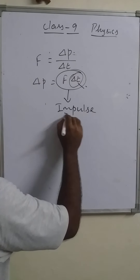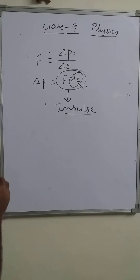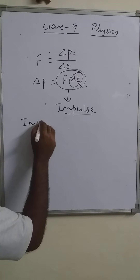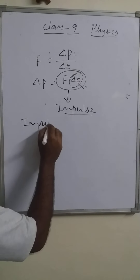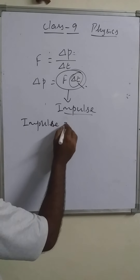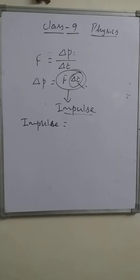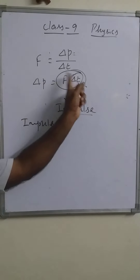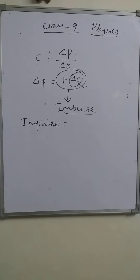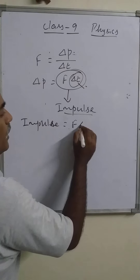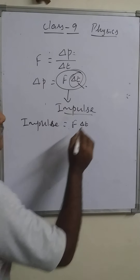So we can say impulse is the force multiplied by the short interval of time, that is F times Δt.